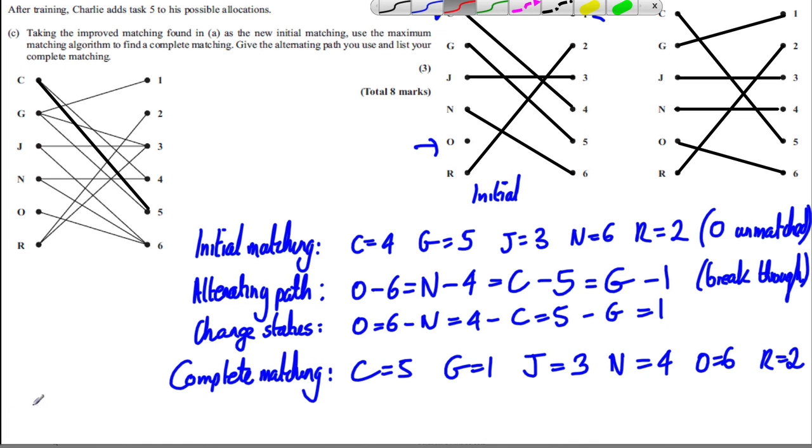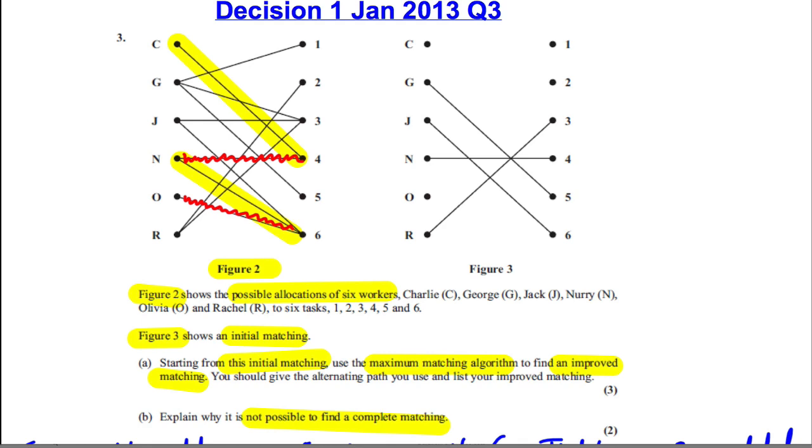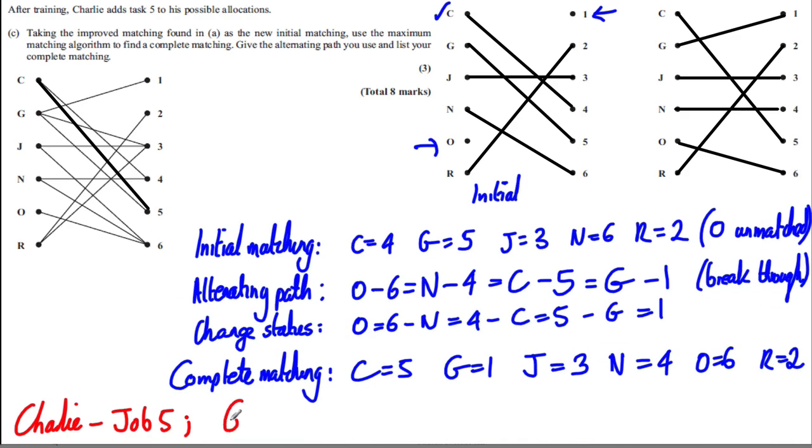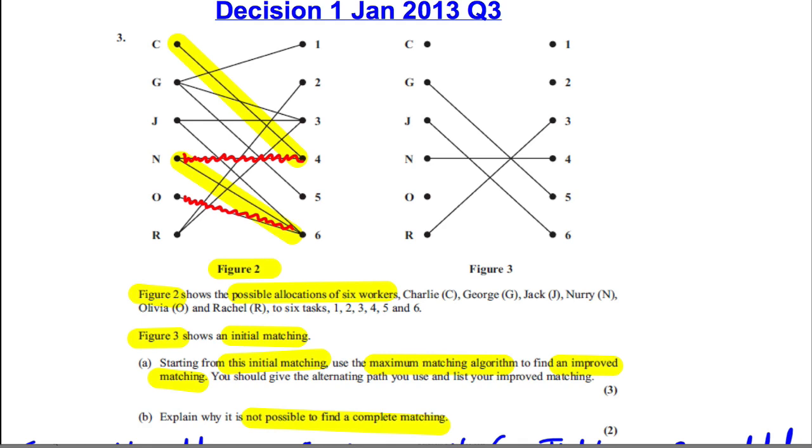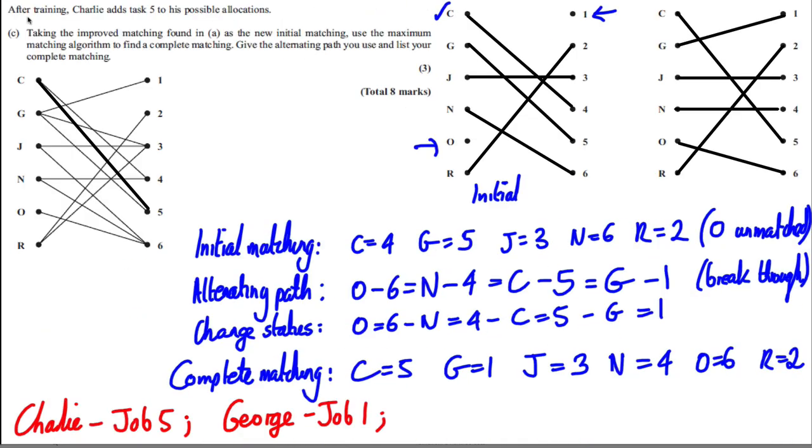But the only thing I should do, just for full clarification, I should put back in context. Charlie job 5. I should recontextualize it. And G was George. So George is with job 1. And you get the picture here. It's Jack, Nuri, Olivia, Rachel. So Jack job 3. Nuri job 4. Olivia job 6. And Rachel job 2. It's good to practice to put it into context of the question. And we're done.